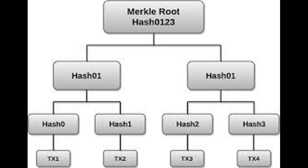Merkle trees. Then moved to leaf nodes, data checked then goes to parent node. Parent node sends to root node. Problem solved, information goad. Merkle trees — provable immutability and transaction integrity. In comes the data, outcomes 256.